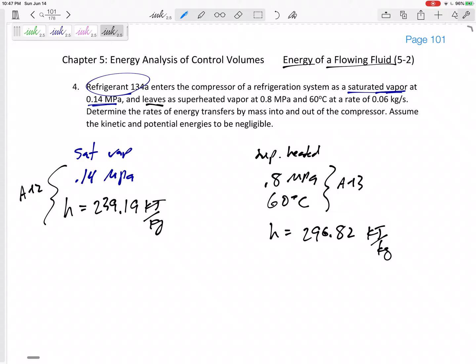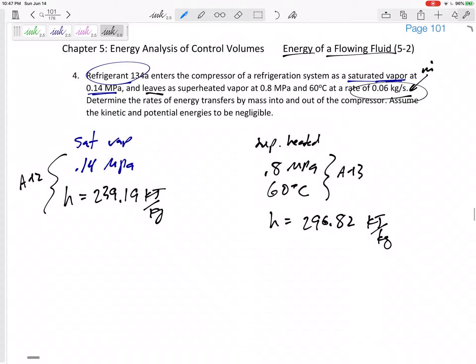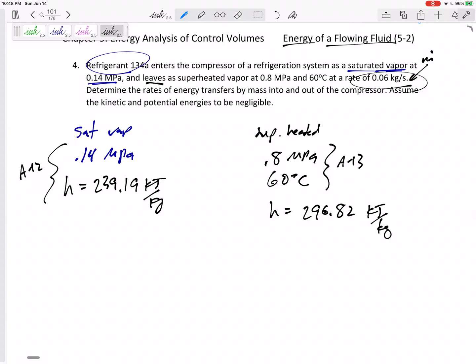Determine the rates of energy transfers by mass into and out of the compressor. Assume kinetic potential energies to be negligible. And this right here is the M dot. It doesn't explicitly state that, but it is not collecting mass. That's the mass going in and the mass going out, one inlet. So M dot going in equals M dot going out equals 0.06 kilograms per second.